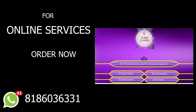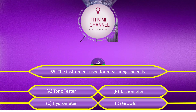The instrument used for measuring speed is: Option A, Tongue Tester; Option B, Tachometer; Option C, Hydrometer; Option D, Growler. The answer is Option B, Tachometer.